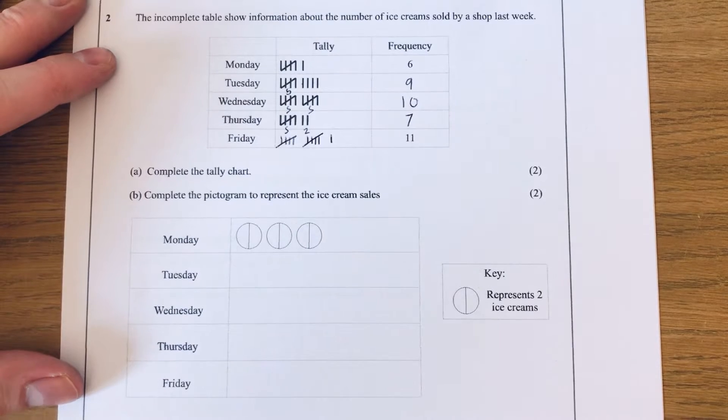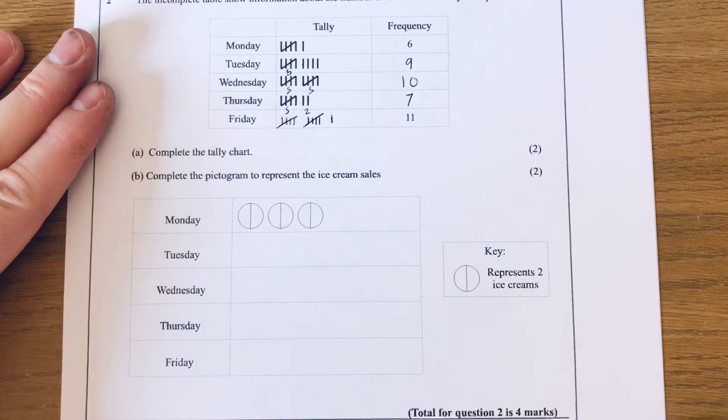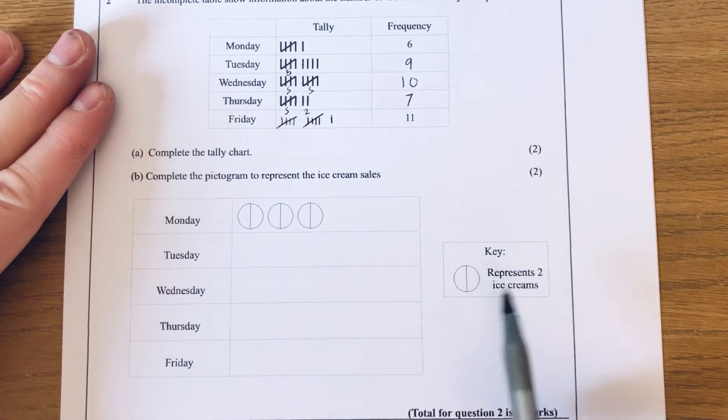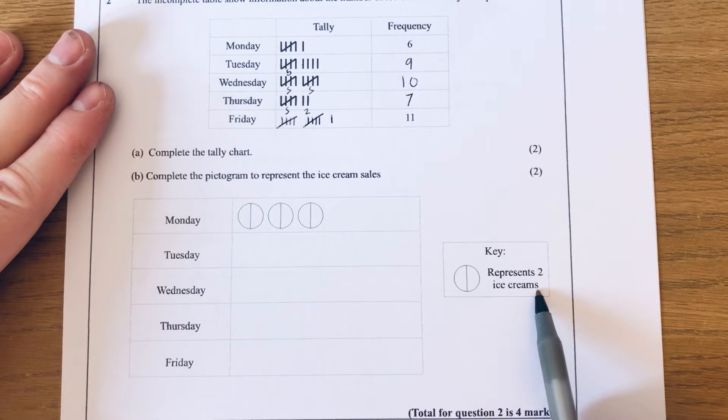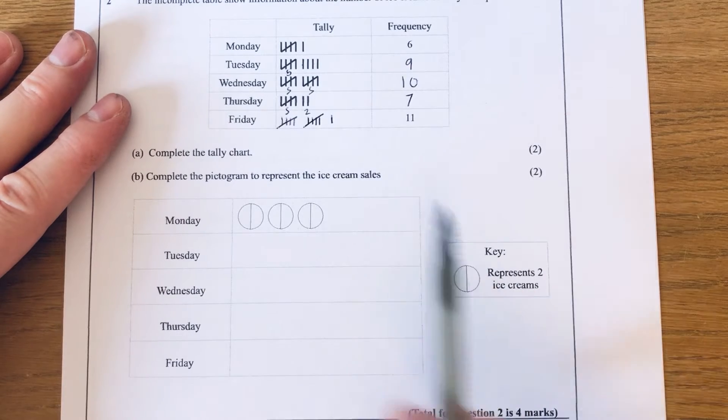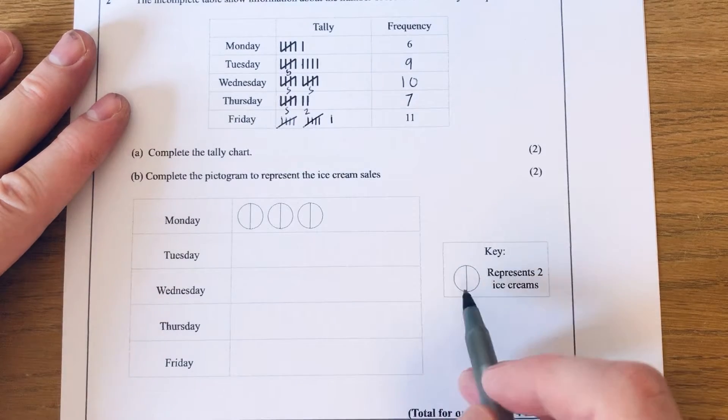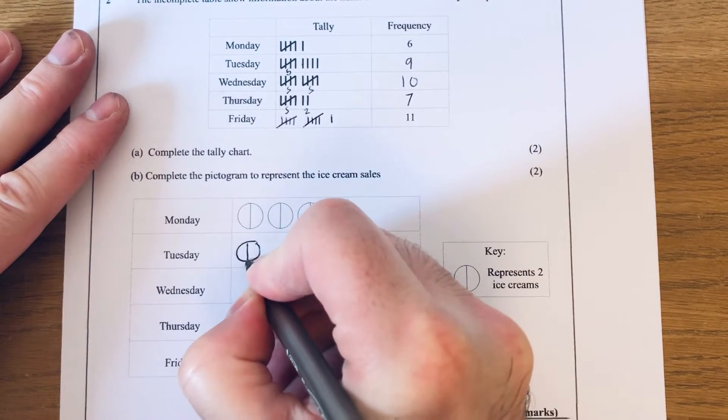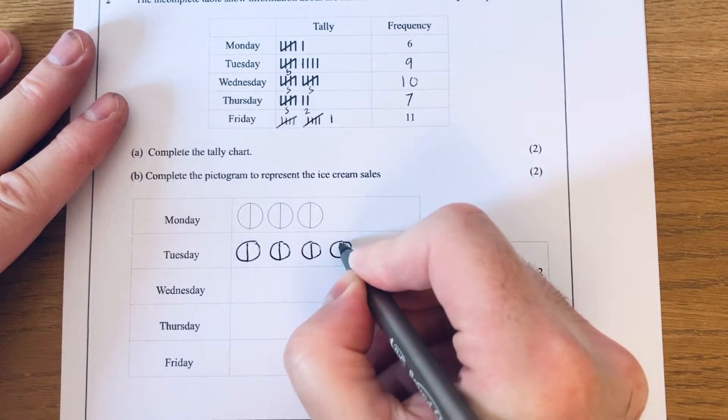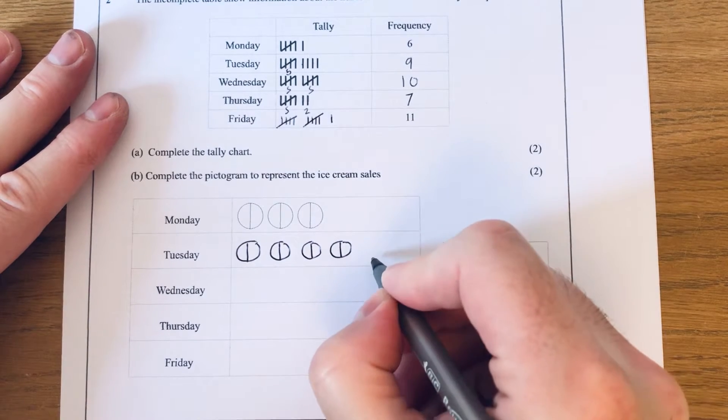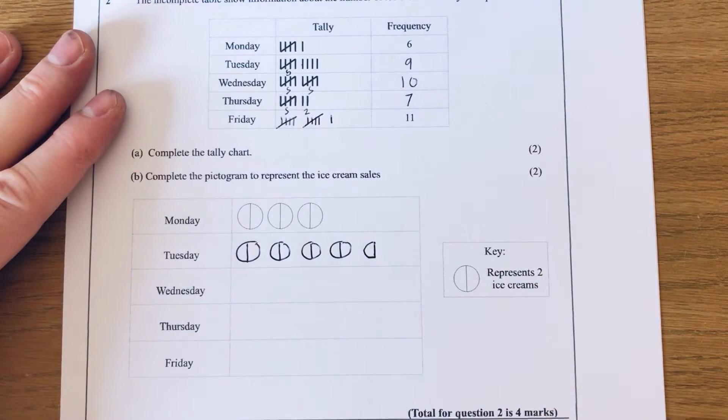That was nice and easy to start off with. Now we've got to do our pictogram. We need to look at the key when you do your pictogram. This shape here represents two ice creams. For Tuesday then, we've got to do nine ice creams, so we need to do two, four, six, eight, and then we just need to do half of that circle and that will give nine ice creams.